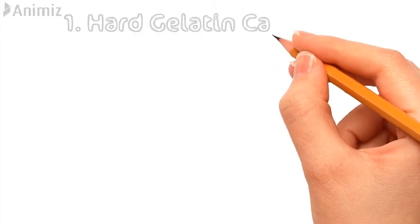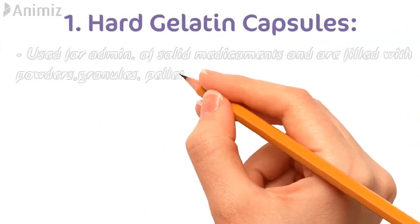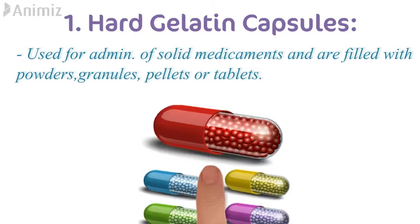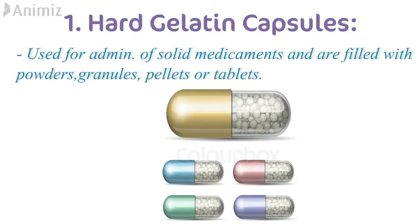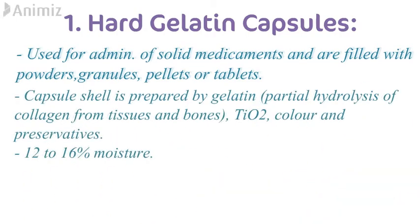Now let's discuss the first type of capsules, which are hard gelatin capsules. They are used for administration of solid medicaments and are either filled with powders, granules, pellets or tablets. The capsule shell is prepared from gelatin, which is prepared by partial hydrolysis of collagen from tissues and bones of animals, and hence is non-vegetarian in origin.